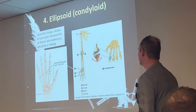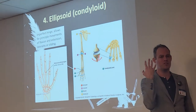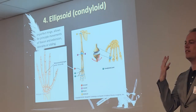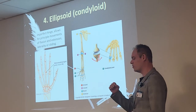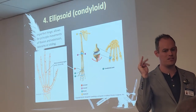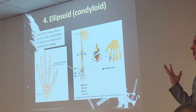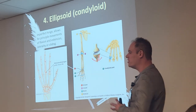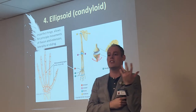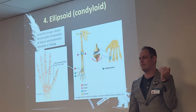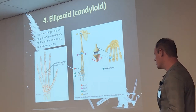Condyloid joints are specifically going to be the joints in your knuckles — also called ellipsoid joints. When you crack your knuckles, you're cracking your condyloid joints. By the way, that is not unhealthy — it does not cause arthritis despite what you've been told. When you crack your knuckles, you're simply releasing air from the joint space.